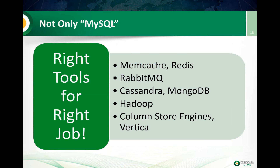If you look at modern applications, you also see it's not only MySQL. MySQL is still a very good and safe choice for OLTP operational relational databases, but it's often supplemented by other technologies: Memcache or Redis for caching, RabbitMQ or ZeroMQ for queuing, Cassandra, MongoDB, Hadoop. Even in the database world, MySQL is not the best fit for every job. For certain things you'd look for column storage engines, or solutions like Vertica, which is quite popular among our customers for analytics alongside MySQL.